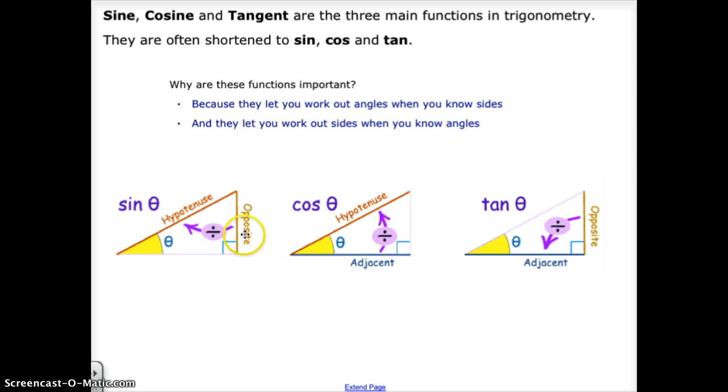For sine, we would need to know the opposite side value and the hypotenuse value of the right triangle. And with the ratio, we could create a decimal value which has a corresponding angle value in a chart you will see in a minute.